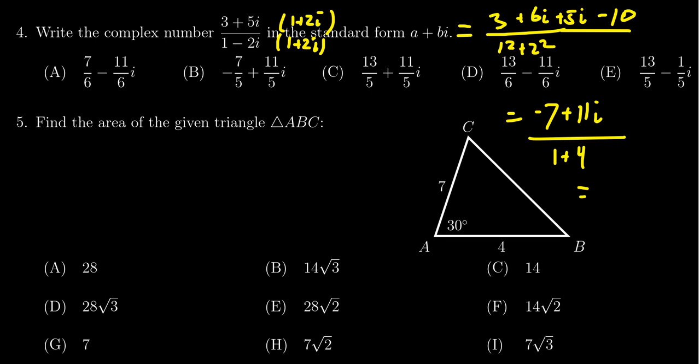We do need to break it up into a real part and imaginary part. The denominator turns out to be 5, so you get negative 7 fifths, and you get 11 fifths i as the final result. This is the standard form, in which case then we select choice b as the correct answer.